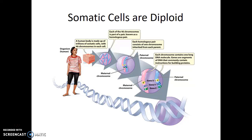Each one of our body cells has 46 chromosomes, and those chromosomes are found in 23 matching pairs. We call these matching chromosomes homologous chromosomes, and for humans, 22 out of the 23 pairs of chromosomes are always homologous. It's only the sex chromosomes that may not be homologous, depending on an individual's biological sex.